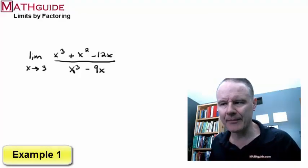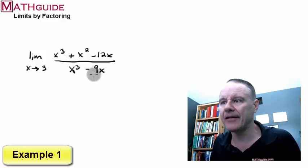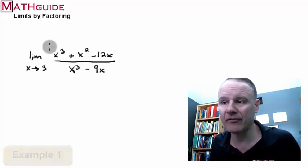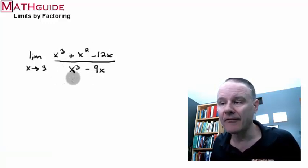Here's our first example. In the first example we have a polynomial in the numerator, polynomial in the denominator. We're finding the limit of this rational expression as x approaches 3.